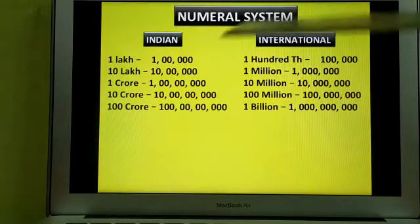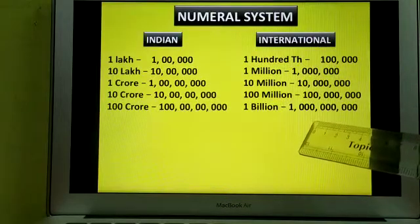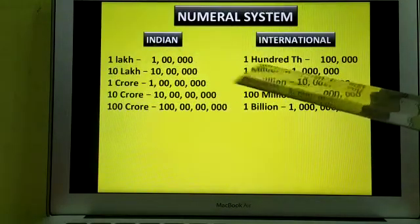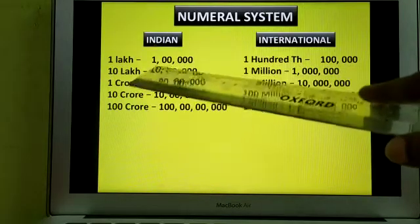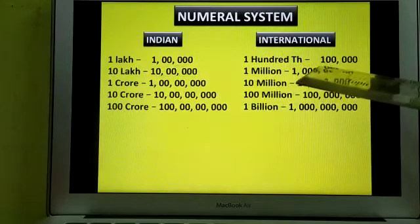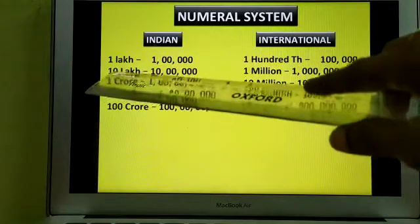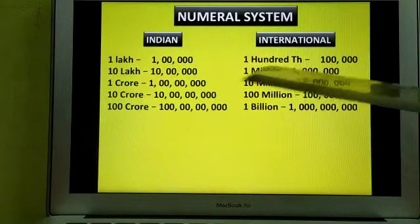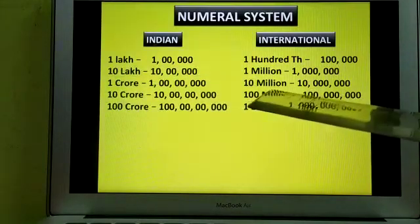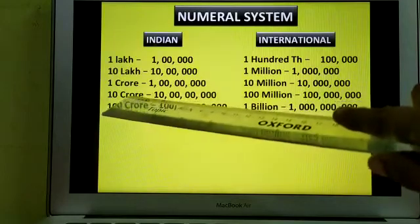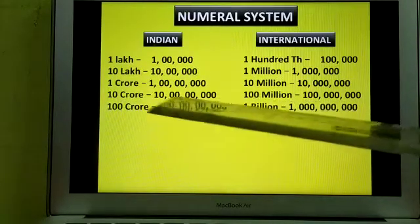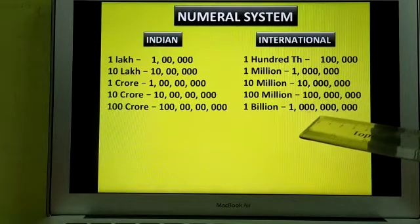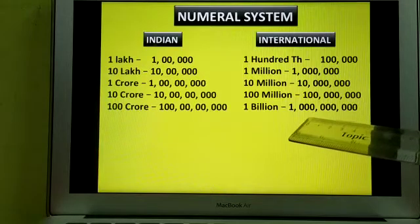Now here is the comparison: Indian numeral system versus international numeral system. One lakh in the Indian system is 100,000 in the international system. Ten lakhs in the Indian system is 1 million in the international system. One crore in the Indian system is 10 million in the international system. Ten crores in the Indian system is 100 million in the international system. One hundred crores in the Indian system is 1 billion in the international system. Follow the zeros and the commas as per the periods.